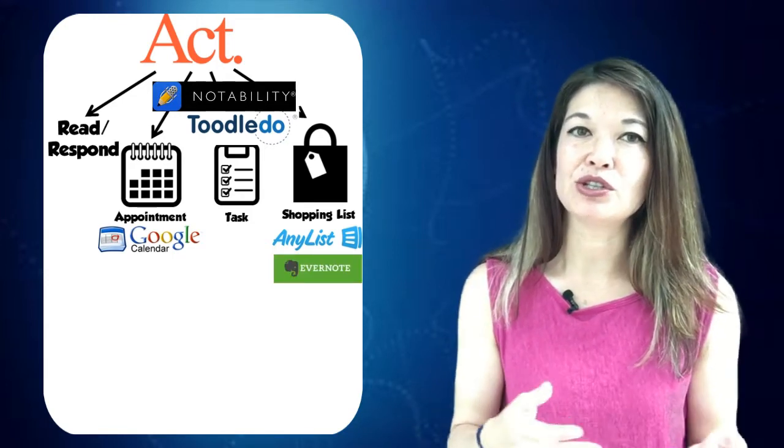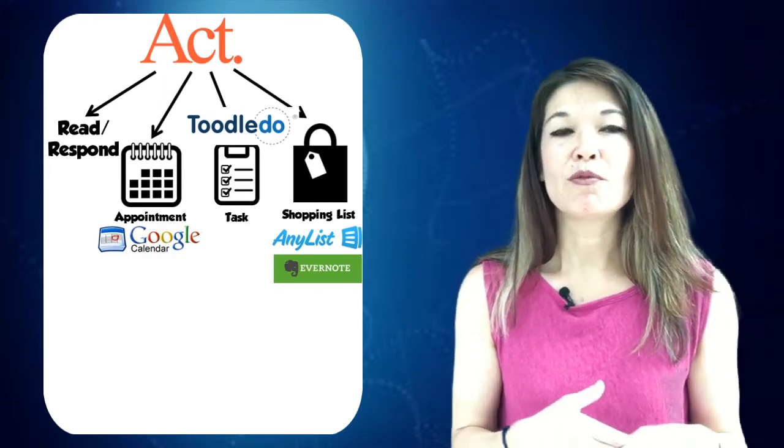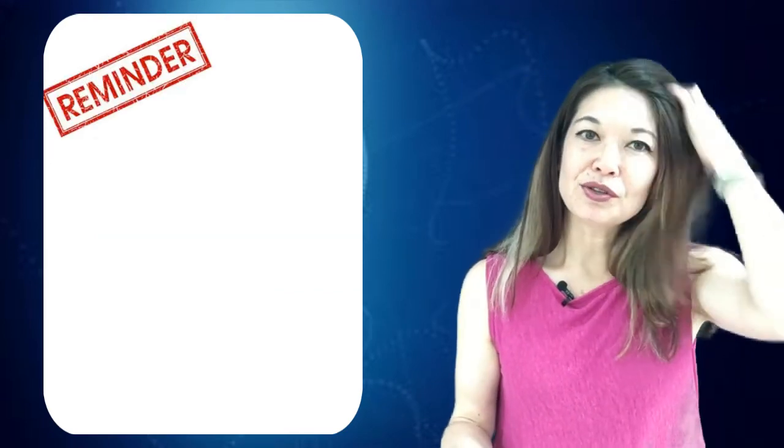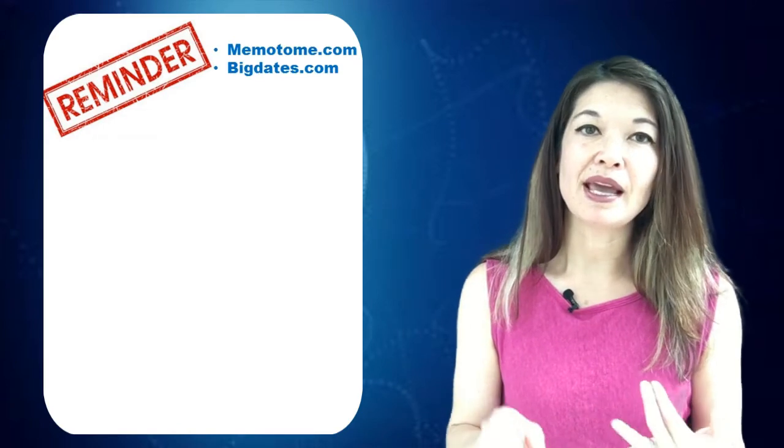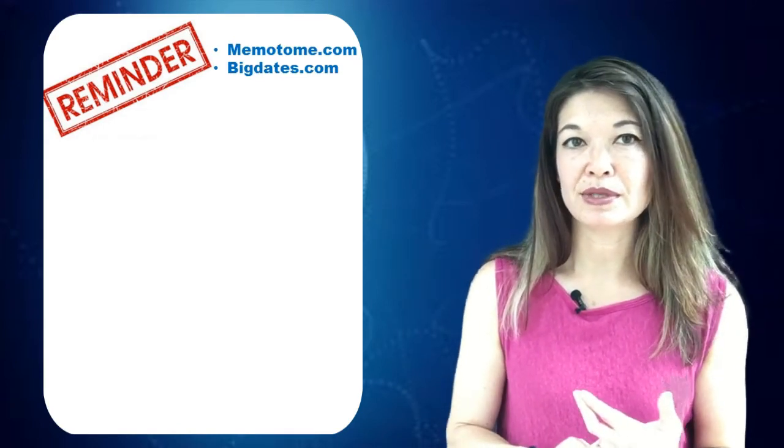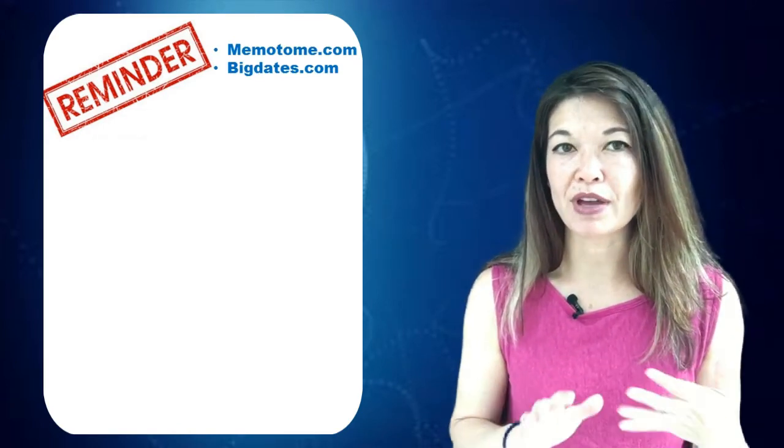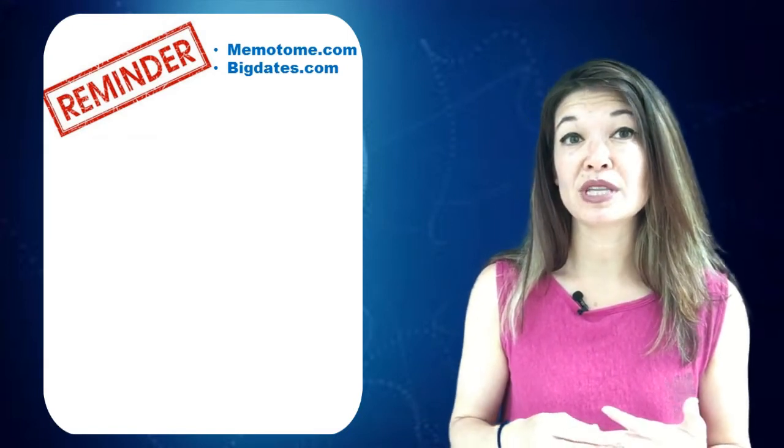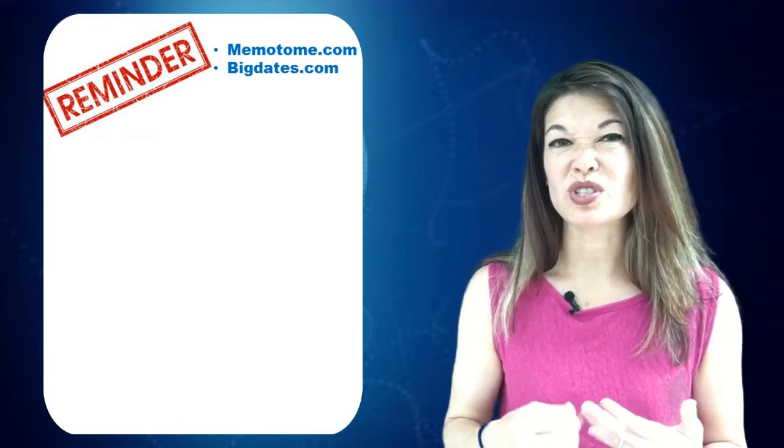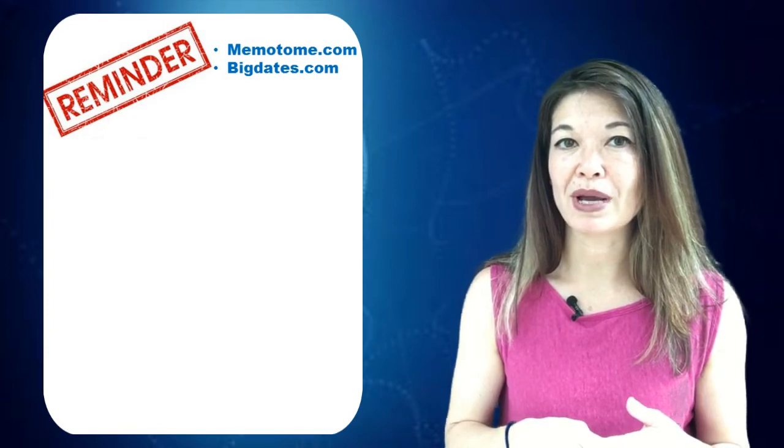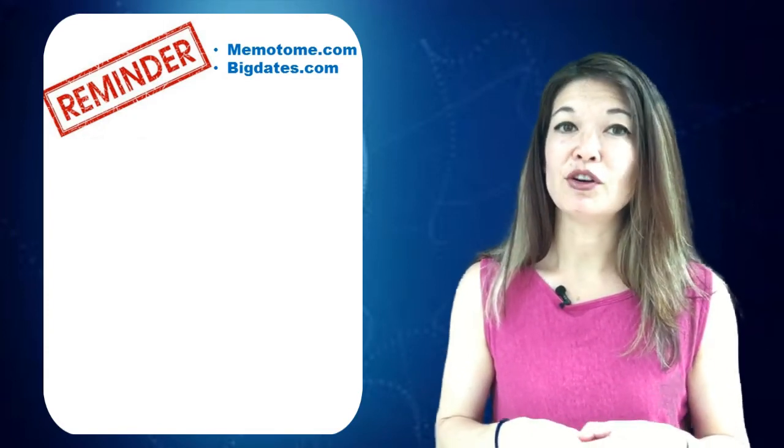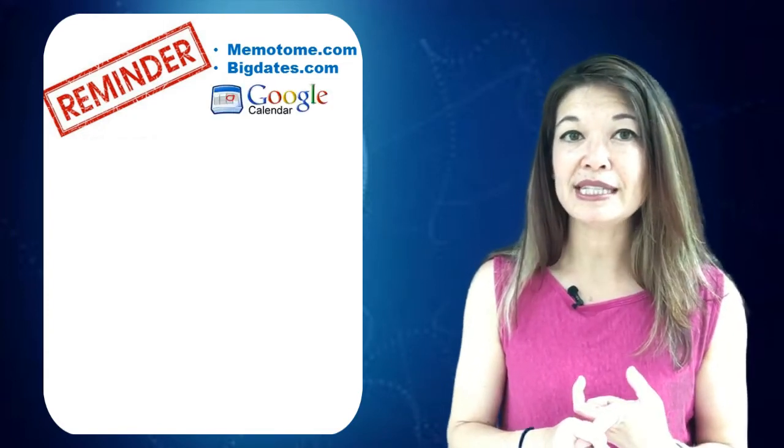For more immediate reminders, I use both Bigdates.com and Memotome.com to help remember birthdays and other events and/or tasks. Both services will send me emails which are sometimes a little more immediate than what appears on my task list for the day. I've also been known to use Google Calendar and its email reminder function for one-time reminders.